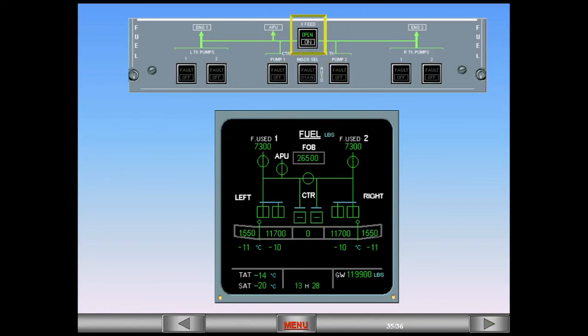The cross-feed push-button switch enables the pilot to connect or isolate the left and right sides of the fuel system.